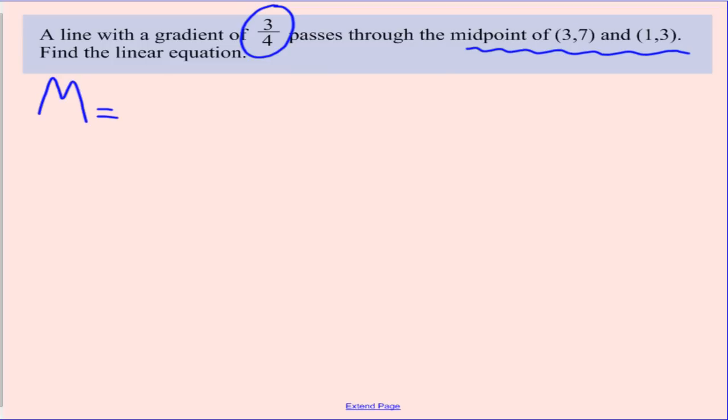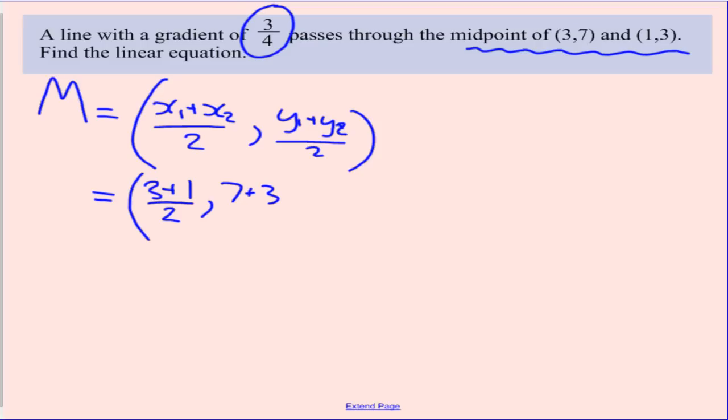Remember, midpoint is equal to capital M. Now, the x value is equal to x1 plus x2, and you halve it because it's in the middle, and your y value is y1 plus y2, and you halve it because we're looking for something in the middle. So x1 and x2 is 3 plus 1, and we halve it, and our y value is 7 plus 3, halved. Calculating that out, 3 plus 1 is 4, halved is 2, 7 plus 3 is 10, halved is 5.